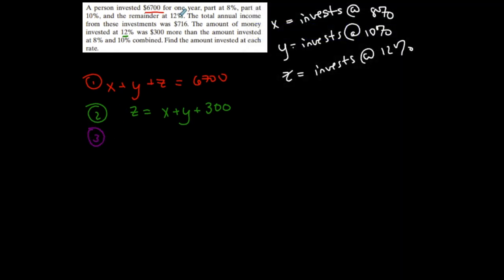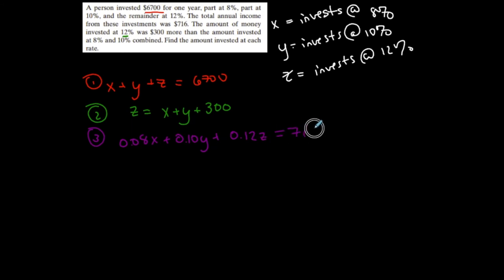For the third equation: the total annual income from these investments was $716. When investing at 8%, the interest is 0.08x; at 10%, it's 0.10y; at 12%, it's 0.12z. So 0.08x plus 0.10y plus 0.12z equals 716. That gives me my system of equations.